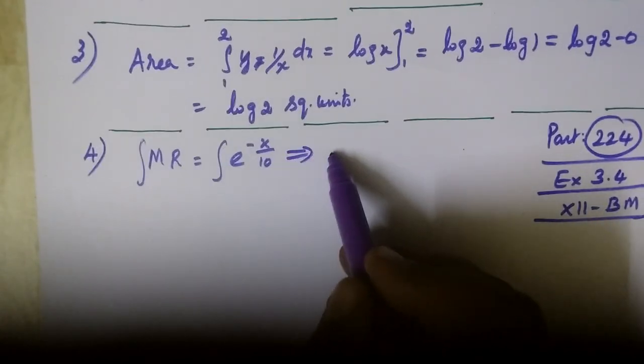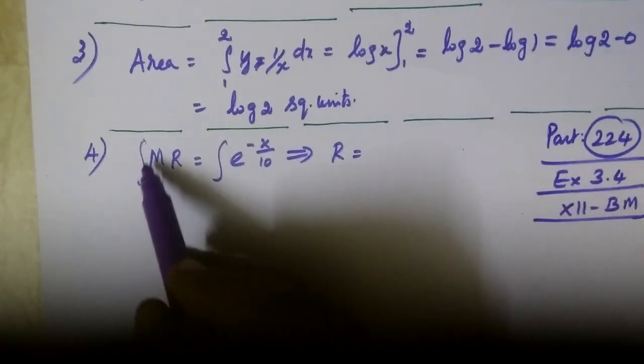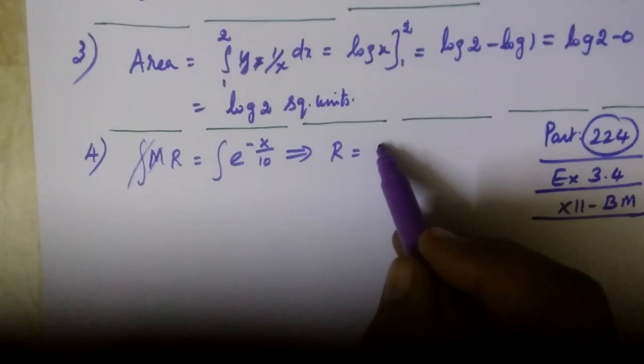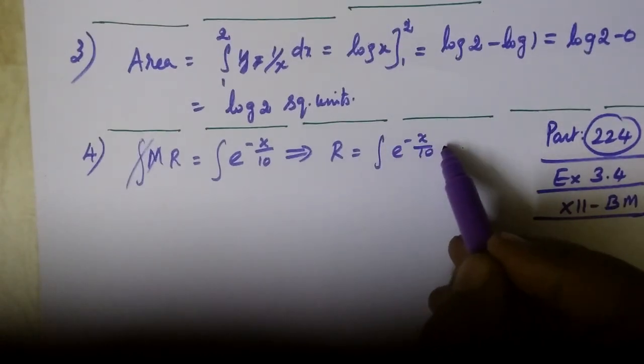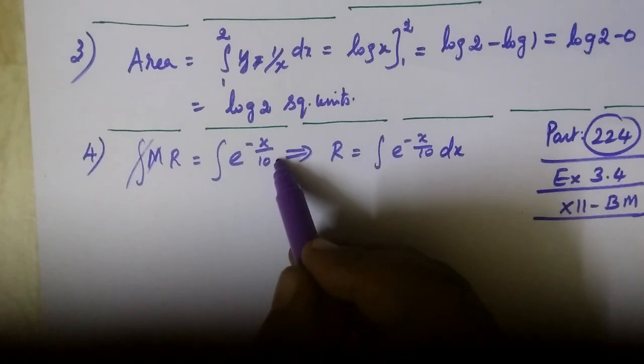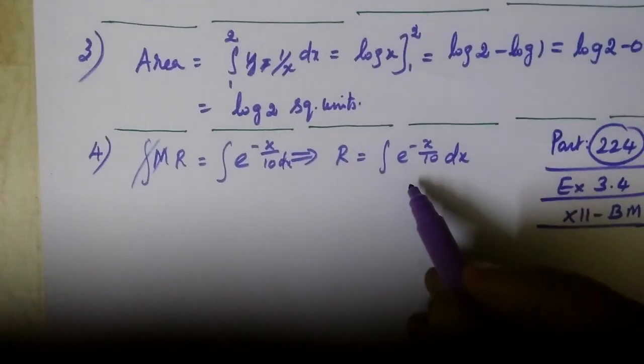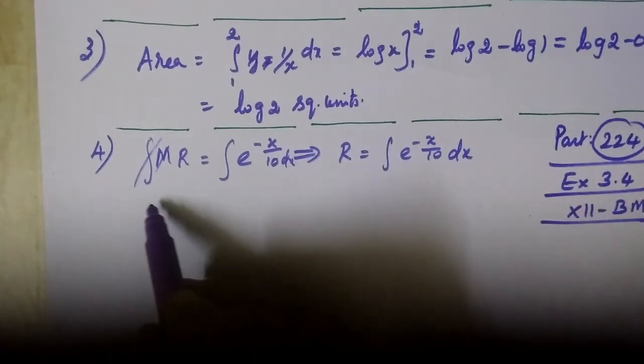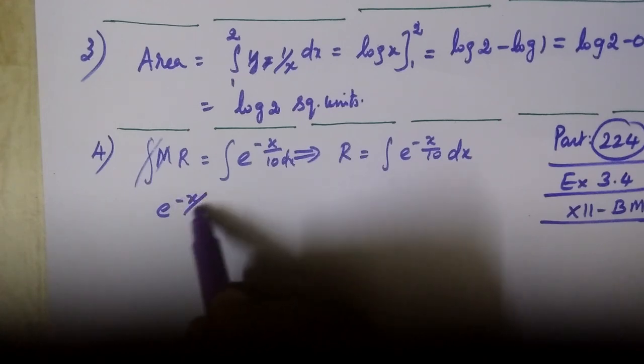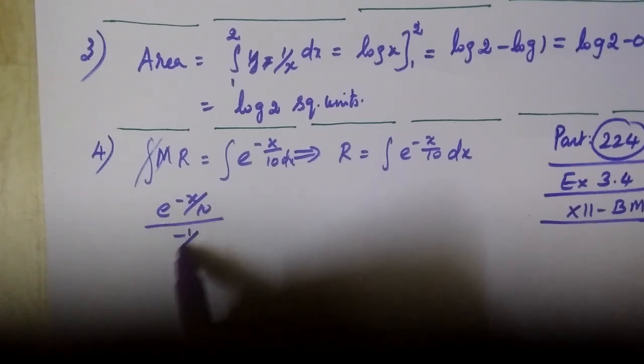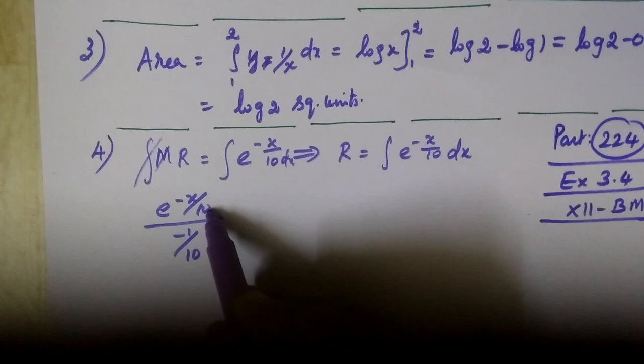So which implies R equal to integral E power minus X by 10 DX. Apo, when you integrate, what you get? E power minus X by 10 by minus 1 by 10. X keanna varo, 1 by 10.